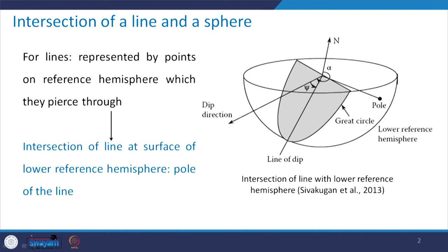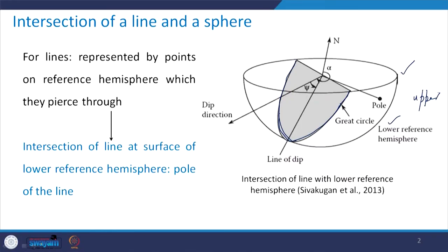Connecting with our discussion from the previous class: this figure shows the shaded plane which gives the great circle, representing a plane and its intersection with the sphere. We saw in the previous class that both the lower and upper hemispheres represent the same information. We will be using the lower reference hemisphere only.